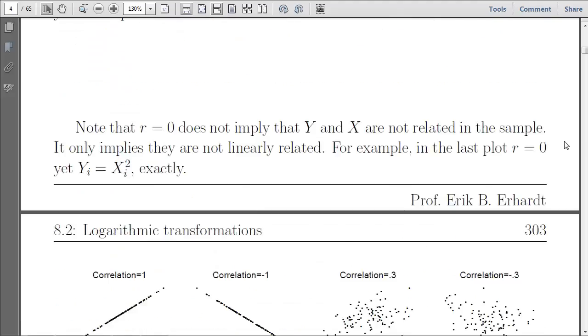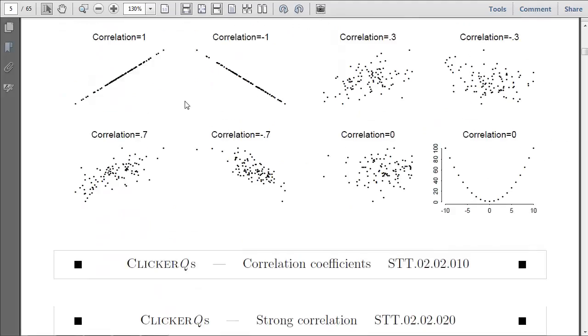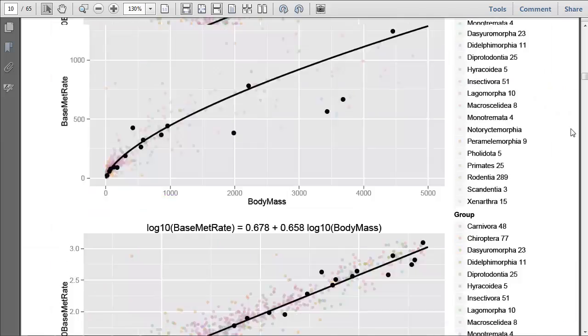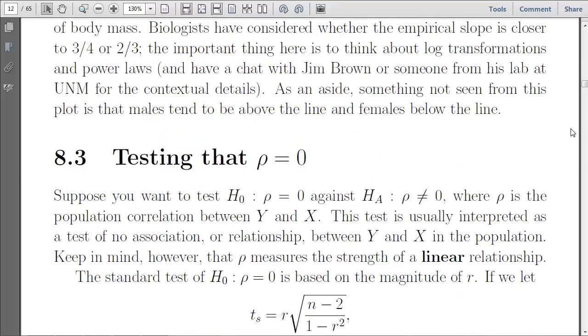We discussed some properties and showed a few plots about what correlations of different magnitudes look like. We also made the case that correlation equals zero does not mean that there's no association, because correlation only measures linear association. There may be a non-linear association that is not being picked up.